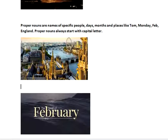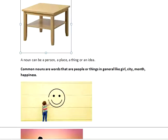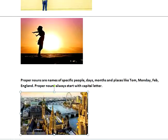So that's all from my side for this tutorial. We discussed nouns — a noun is basically the name of anything: it can be a person, a thing, or an idea. There are two categories: common nouns, which are names of people or things in general, and proper nouns, which are names of specific people, days, months, and places.